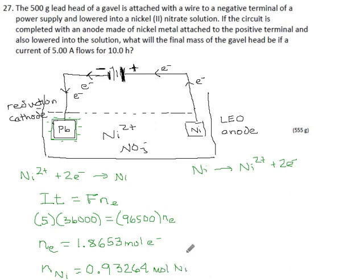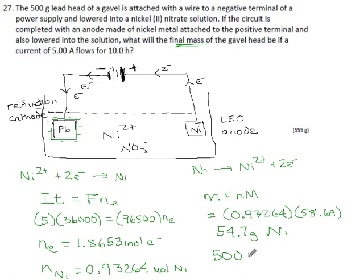But we don't want moles of nickel, we want a mass. Mass is number of moles times molar mass. The number of moles we just found: 0.93264. The molar mass for nickel is 58.69. Multiply that by 58.69, and we get 54.7 grams of nickel. So this gavel head used to be 500 grams of lead. Now it's picked up 54.7 grams of nickel. It is now a 554.7 gram gavel head of nickel-plated lead.